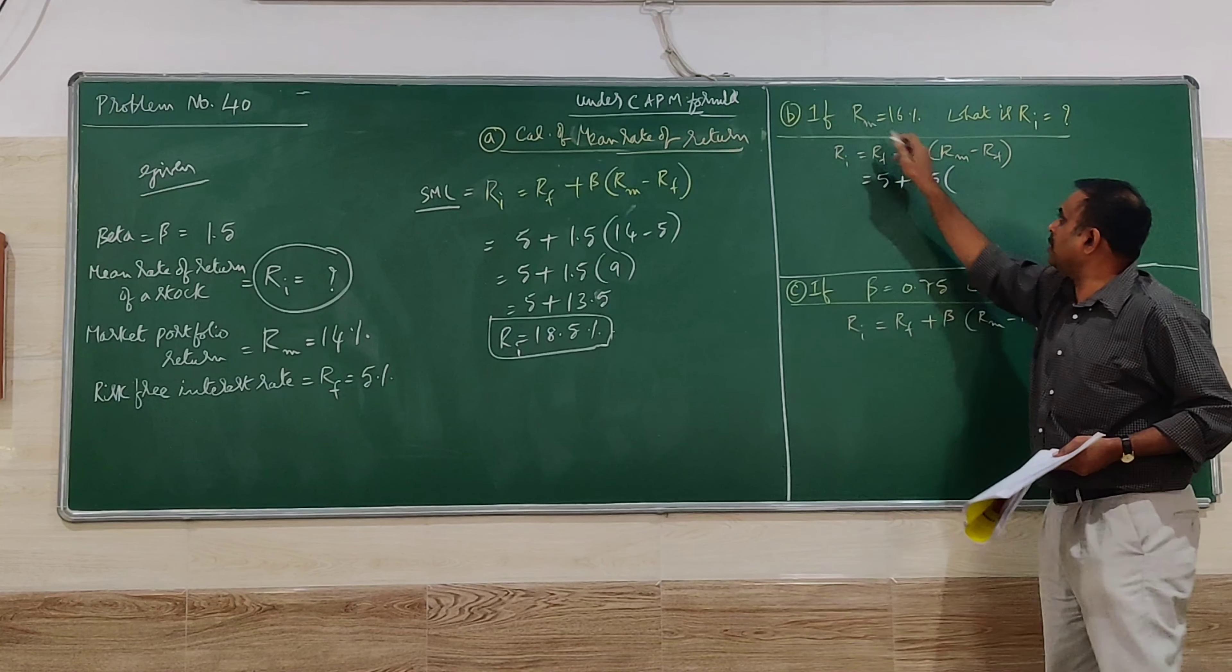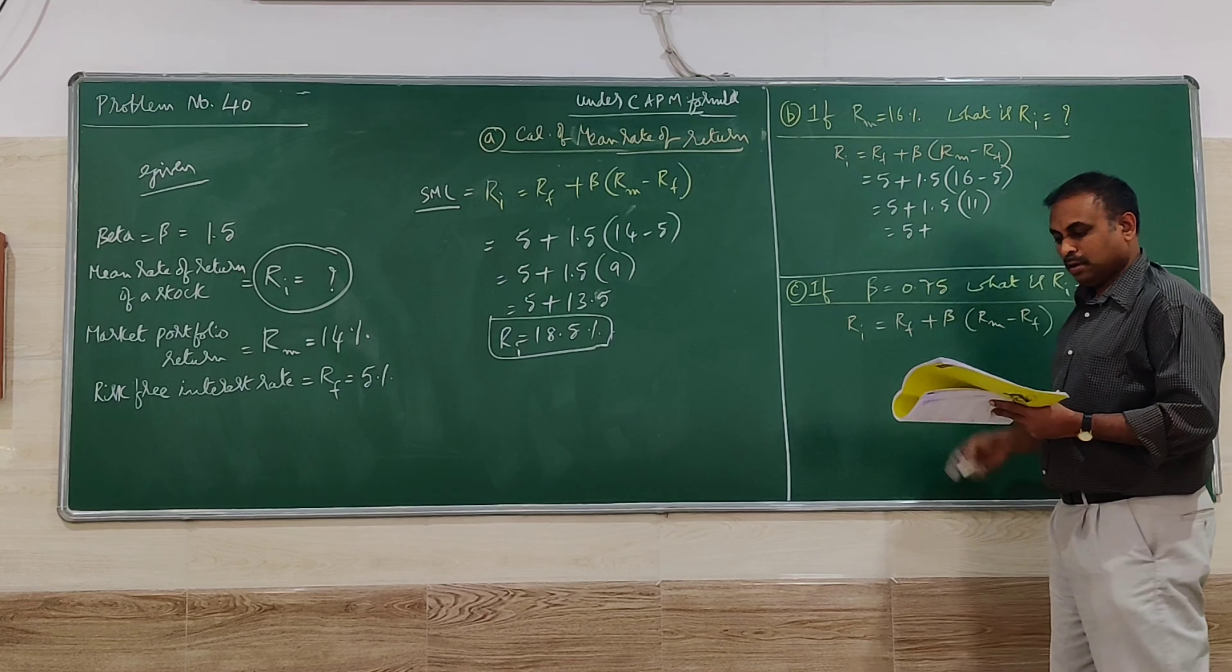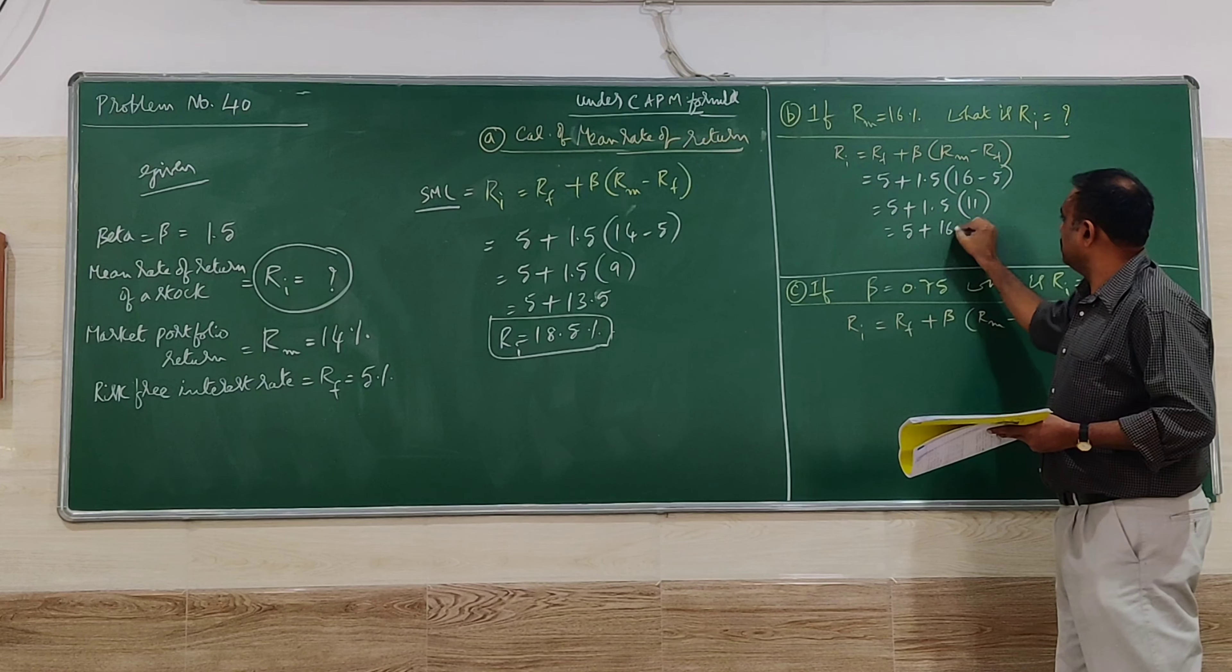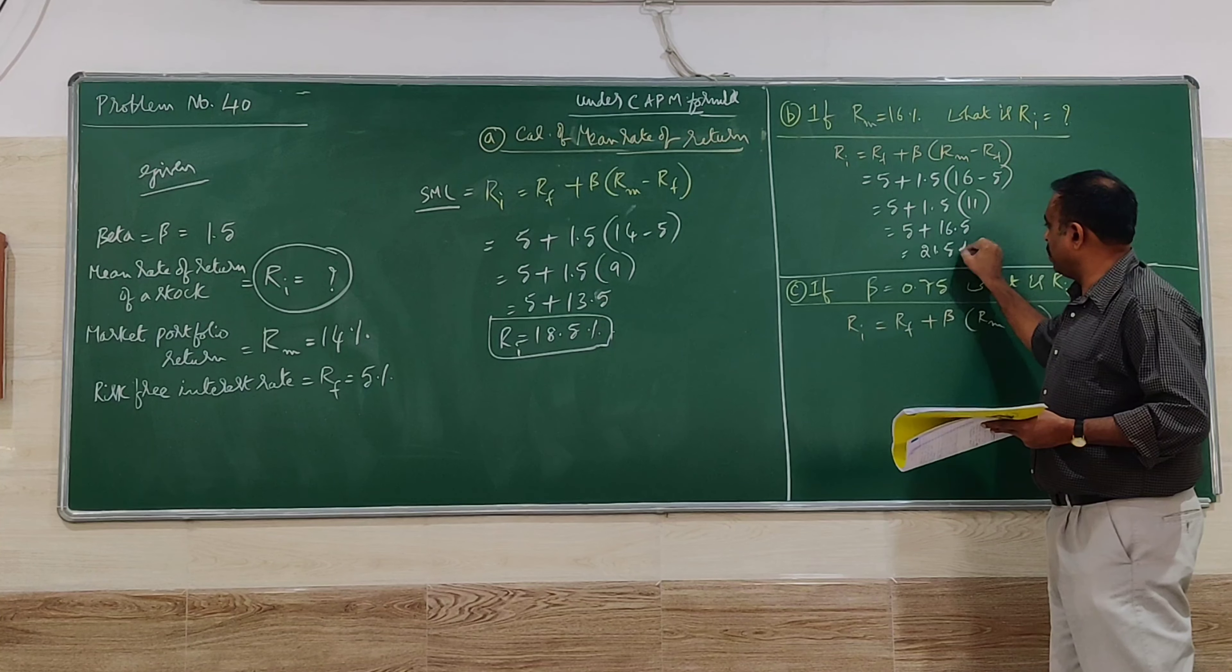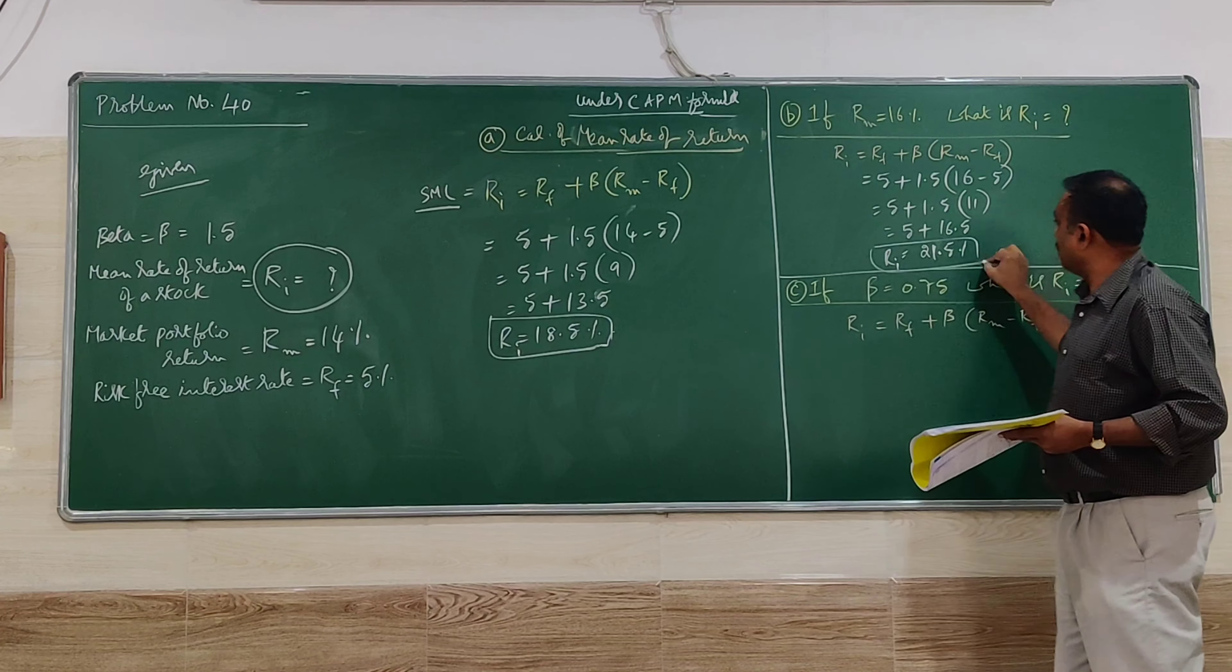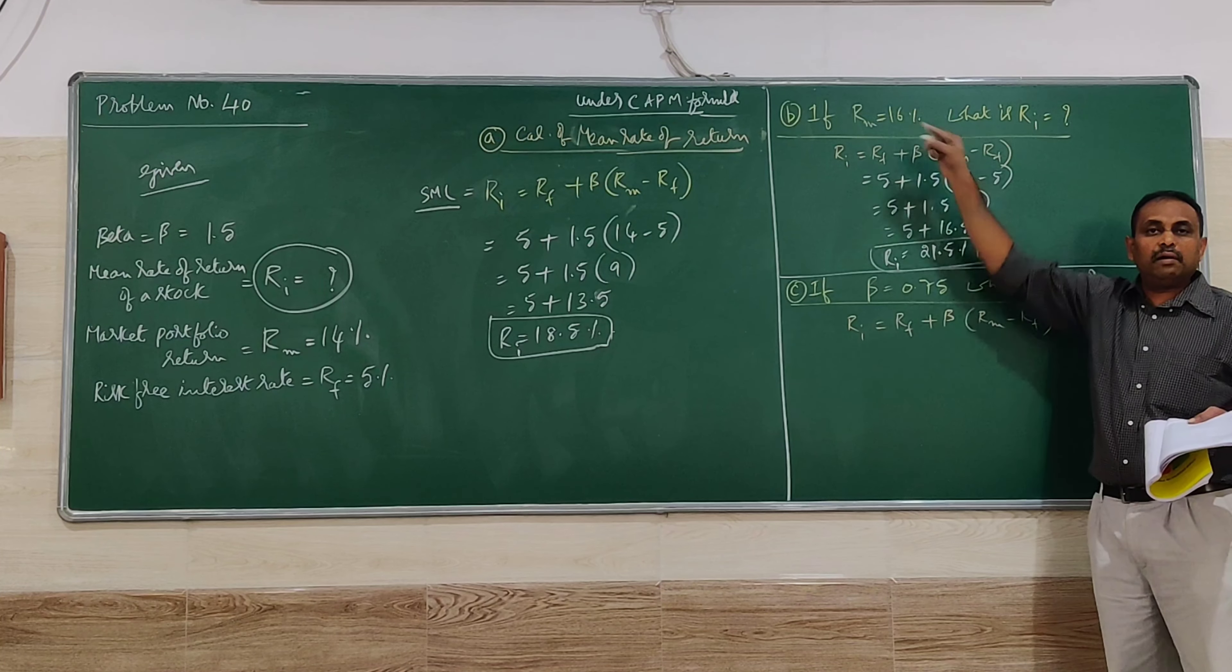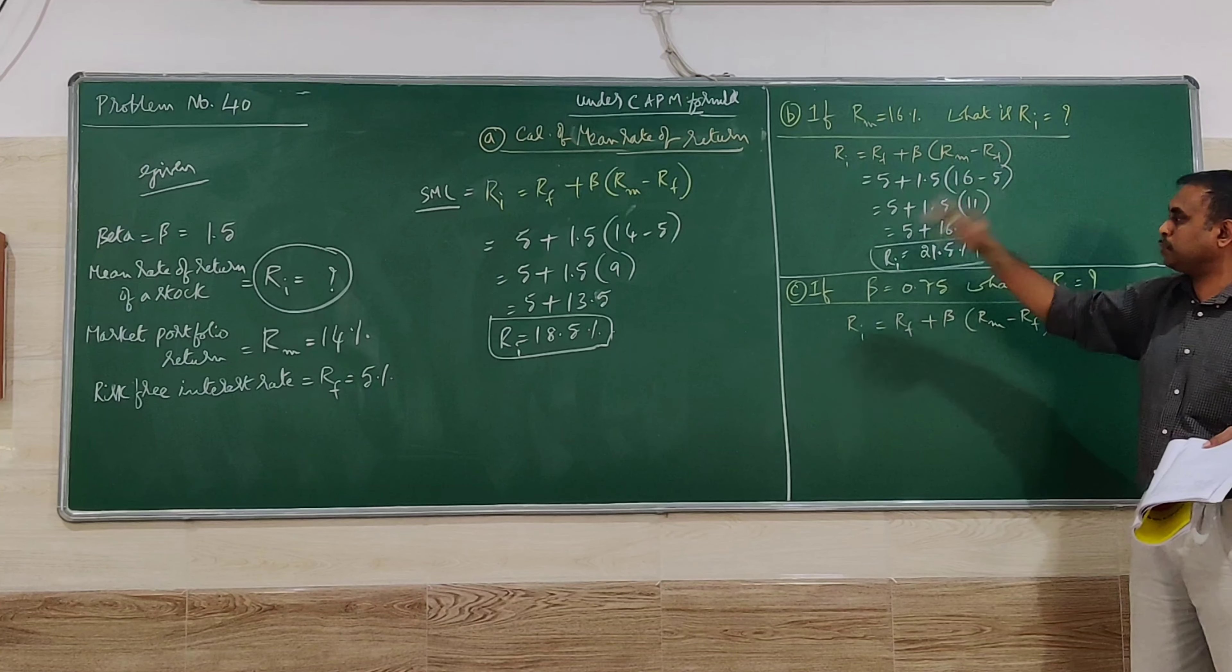16 minus 5 is 11, so RI = 5 + 1.5(11) = 5 + 16.5 = 21.5%. When market return increases, the return for the particular stock also increases.